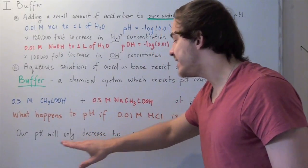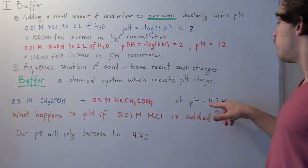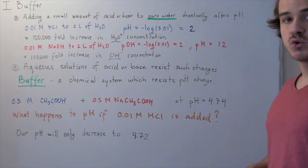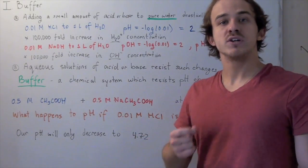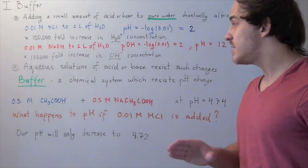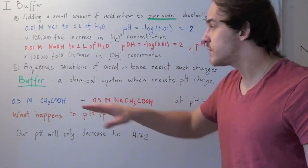Now our pH will only decrease from 4.74 to 4.72. That's a change of 0.02, a very small change. That's because this system has a buffer system, and buffer systems are really important.